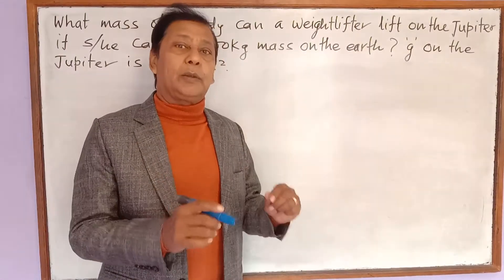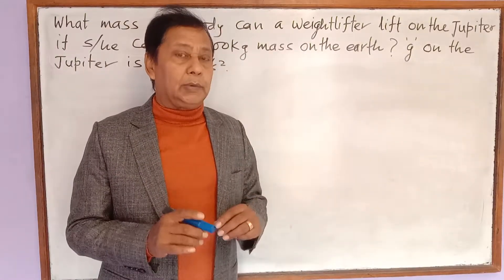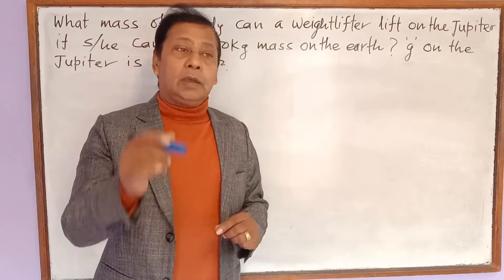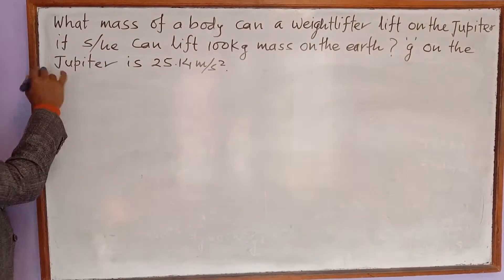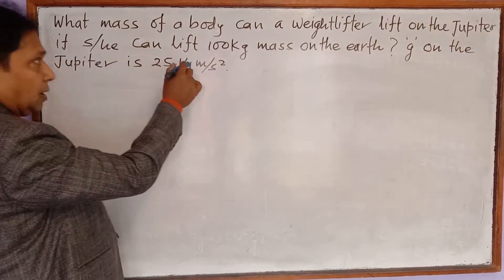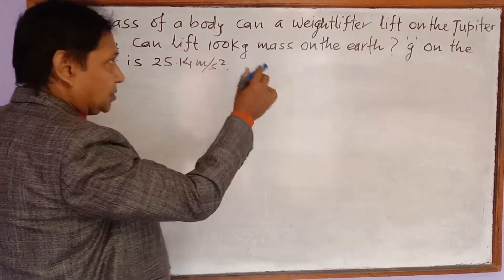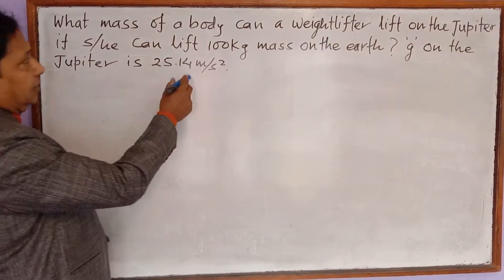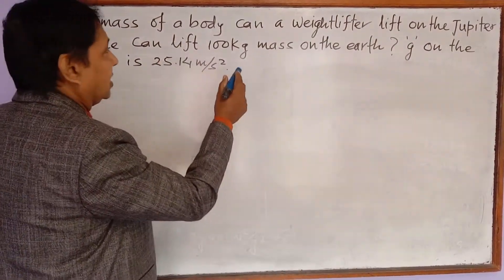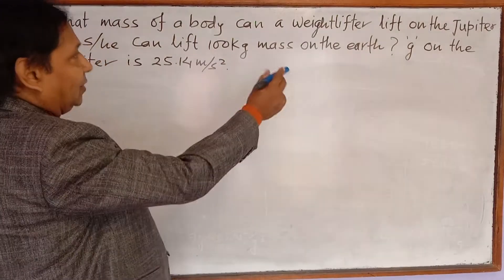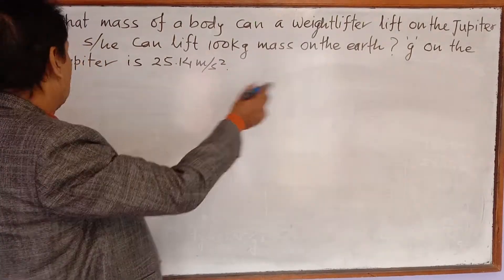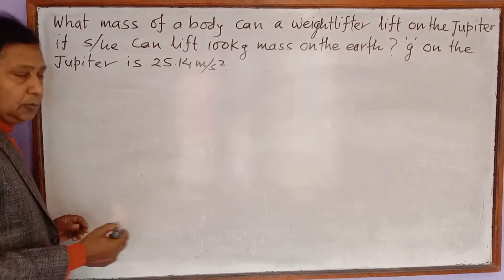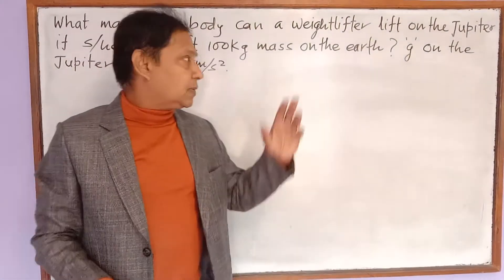Today I am going to solve a numerical problem related to the weight of a body. The problem is: what mass can a weightlifter lift on Jupiter if he can lift 100 kg on Earth? The value of g on Jupiter is given as 25.14 meters per second square.